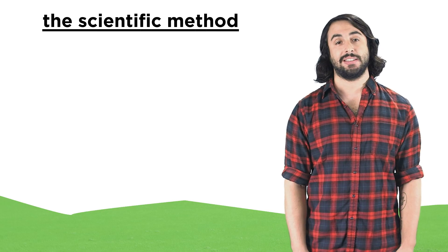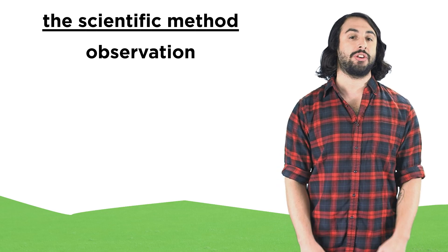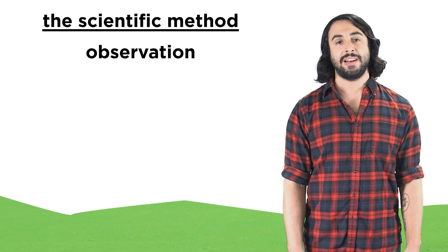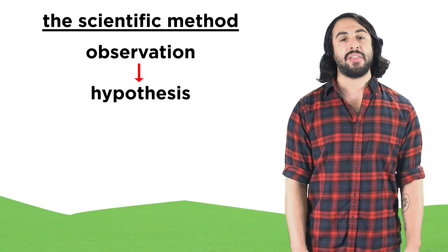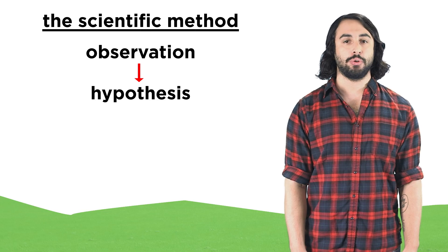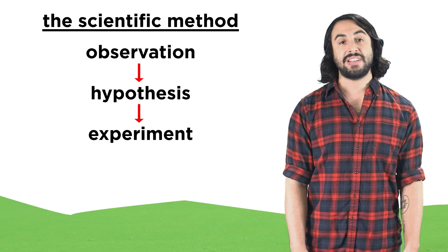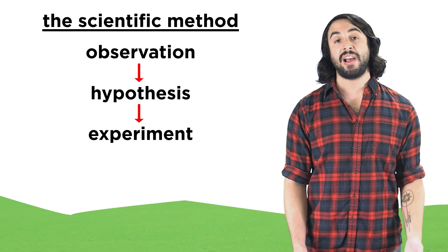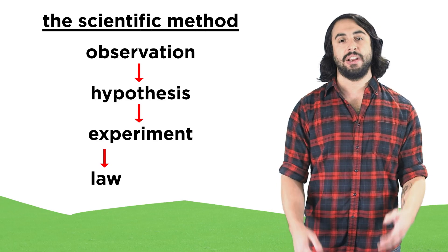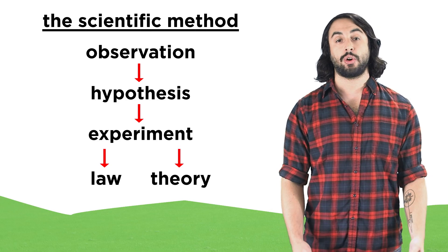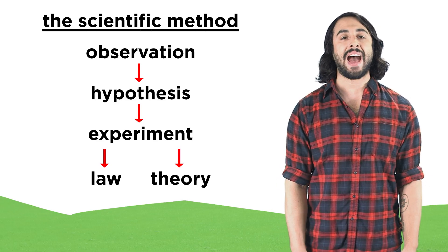So that is how we do science. We start with observation, from which we formulate a hypothesis, and then gather empirical data through experiments. If the data yields consistent results, we might formulate a law. Or, if we can organize all the data into an equation or set of postulates, we have a theory.